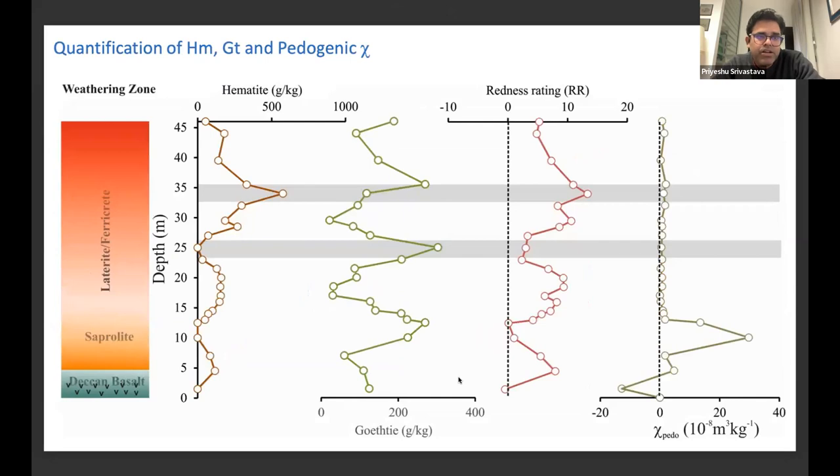We also did the quantification of hematite and goethite using diffuse reflectance spectroscopy. We tried to also extract the pedogenic susceptibility by using the citrate bicarbonate dithionite extraction method. In this, we can see again, like what we saw in the geochemical behavior, we can see at certain point hematite is totally absent, whereas goethite is present in really high concentration, but that cannot be seen in the other rock magnetic parameters or the routine magnetic parameters like susceptibility and ARM.